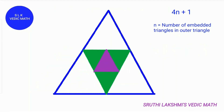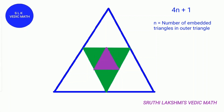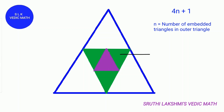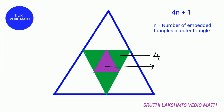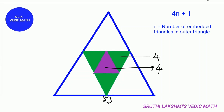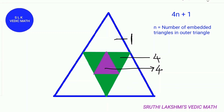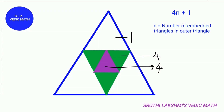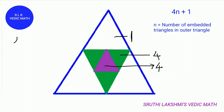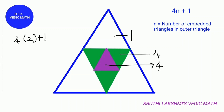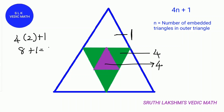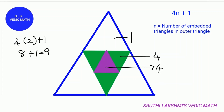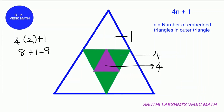Let's see this figure. In this figure there are 2 Embedded Triangles. In each Embedded Triangle we get 4 triangles. So there are 2 Embedded Triangles in this big triangle. We do 4 times 2 plus 1. 4 times 2 is 8, and 8 plus 1 is 9. So there are 9 triangles. And to check our answer, we do 4 plus 4 which is 8, and 8 plus 1 is also 9.